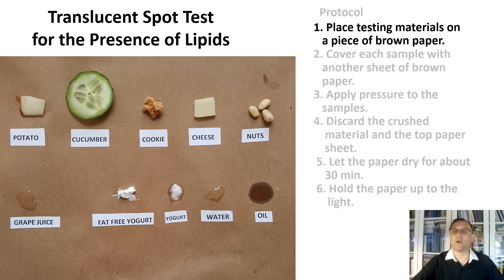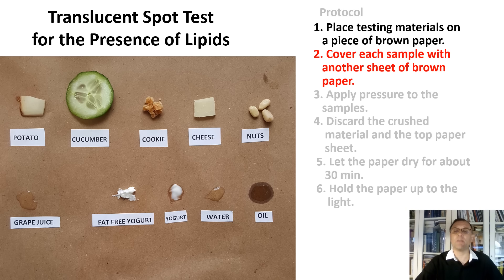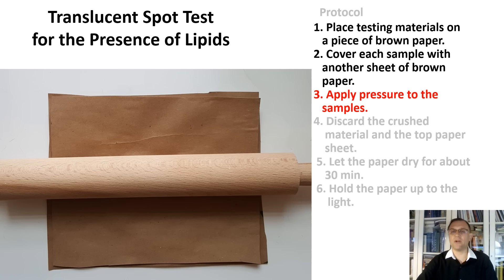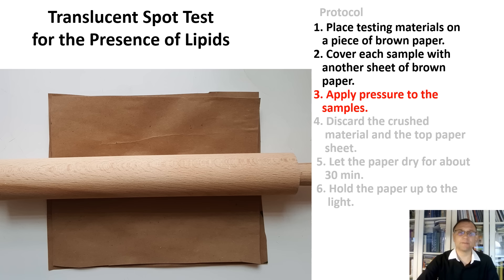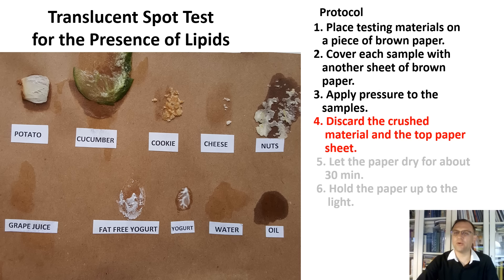The translucency test for the presence of lipids is a very simple test — the easiest test I know. All you have to do is put the tested material on bond paper, though I like to use sheets of brown paper. Cover each sample with another piece of brown paper. Crush all the material with a solid object — I used a rolling pin here, as you could see. You can use a spoon or a hammer, perhaps. Then remove the top sheet of paper, and you see smashed potato, cucumbers, cookies, cheese, and the rest.